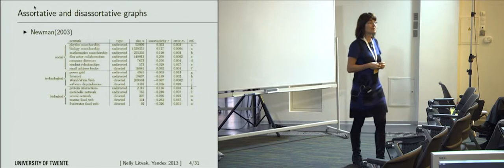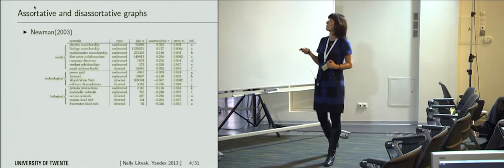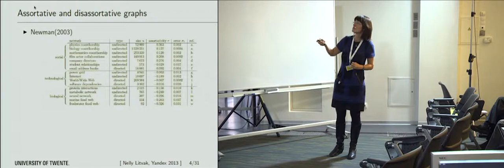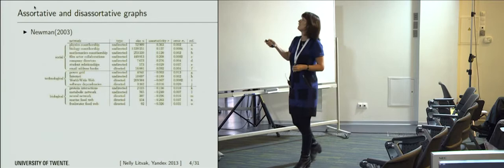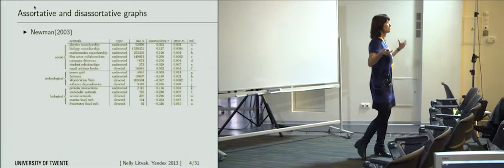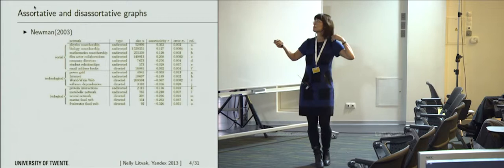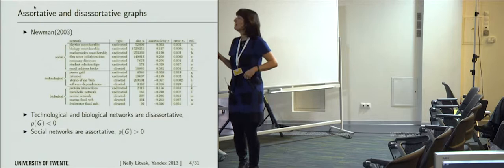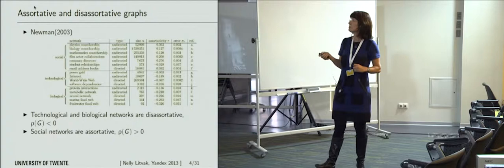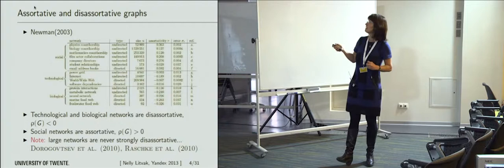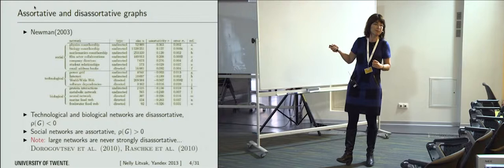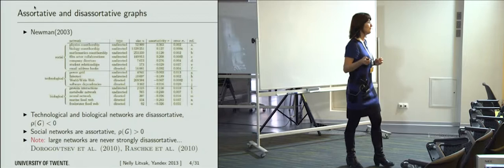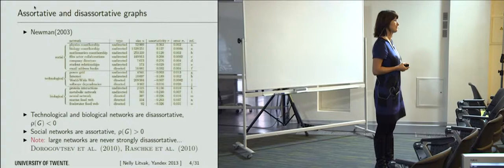Newman used this measure to compute dependencies in all sorts of different networks. There is a table with different examples — social, technological including internet and worldwide web, and biological networks. What he found is that social networks are mostly assortative, meaning the correlation coefficient is positive, so nodes with large degrees tend to connect to nodes of large degrees. Technological networks tend to be disassortative, so this coefficient is negative. However, when we look at the numbers, we see that once the network is a little bit bigger — like the worldwide web sample — the coefficient becomes very small. In many other papers we never see networks with strong negative correlations.